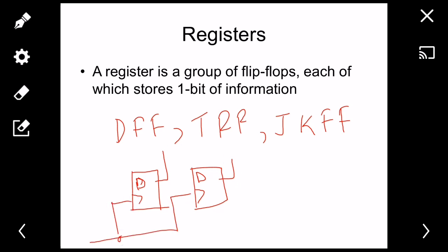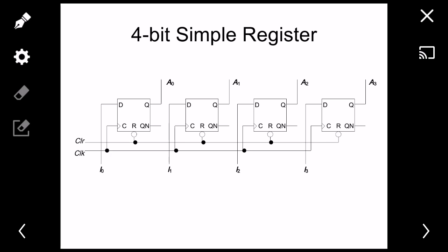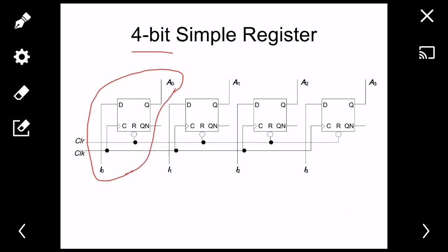This is a simple four-bit register. You can see that I have combined just four D flip-flops to create a four-bit simple register. It is very simple to understand how it works. It is a simple D flip-flop — if there is a clock signal, it is a square wave with positive and negative edges.